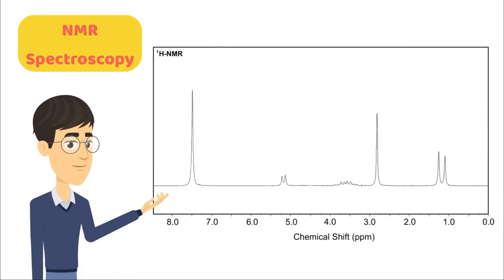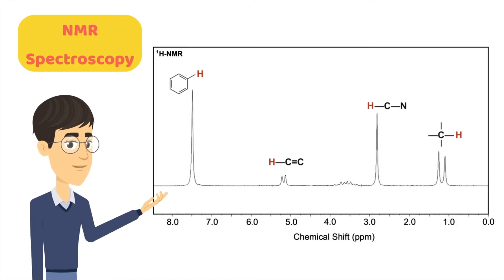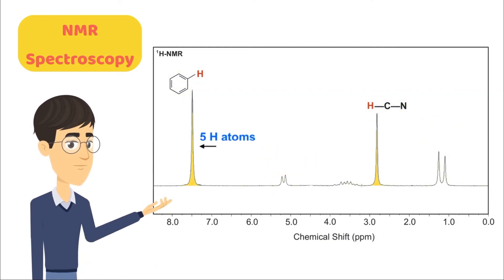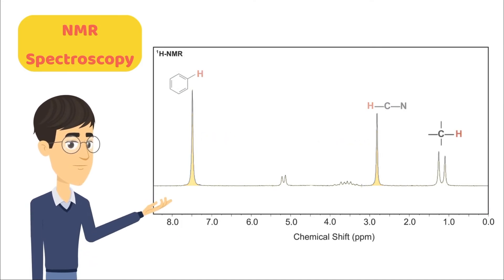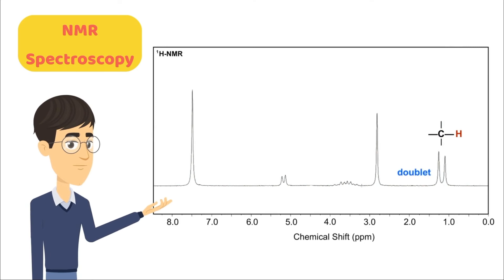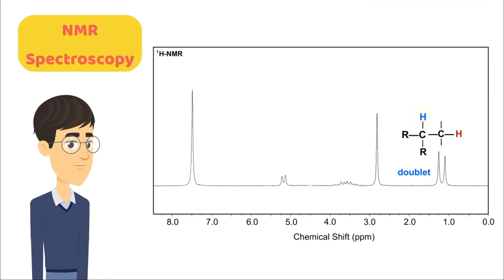Using nuclear magnetic resonance (NMR) spectroscopy, Prapto can find the possible structure of the compound based on chemical shifts, which tell about the environment in which the atoms are present, and the integral, which tells how many atoms are present in that chemical environment. Based on the splitting pattern of the peaks, we can tell how many atoms are present in the adjacent environment — for example, a doublet in proton NMR means there is one hydrogen atom bound to the adjacent carbon atom.